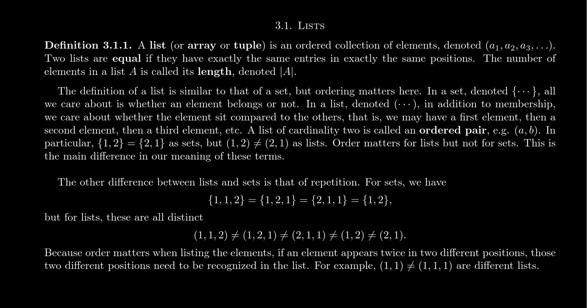If we wanted to talk about how many elements belong to a set, we would talk about its cardinality. For a list, we have the exact same idea, but typically it's referred to as the length of the list. We use the same notation — the vertical lines left and right — that gives cardinality for a set; for a list, it's the same notion of how many things are in the list, but we call it the length. If you have a list of length two, this is referred to as an ordered pair, which of course would just be two elements, but there is a first element and a second element.